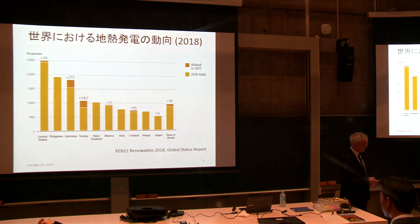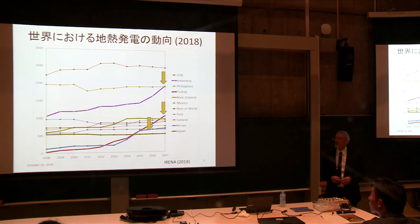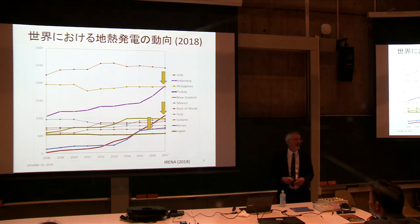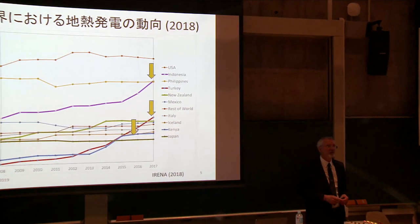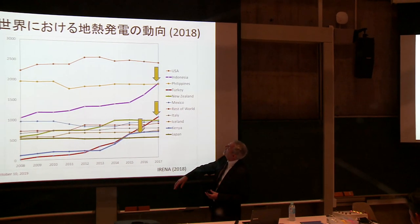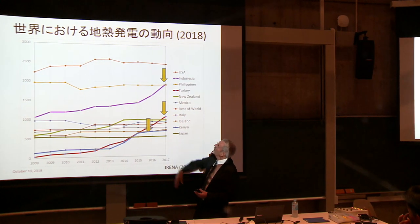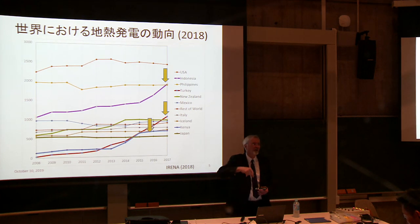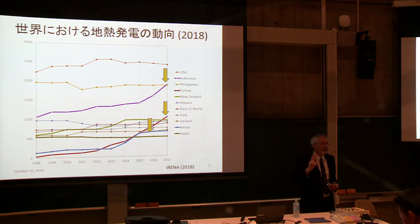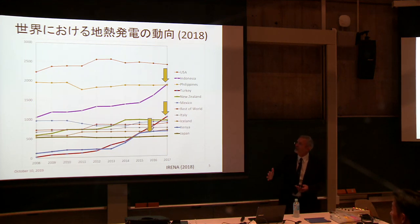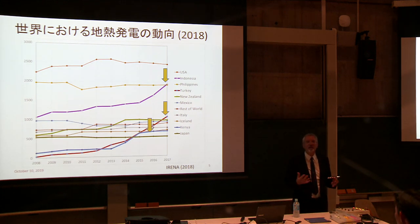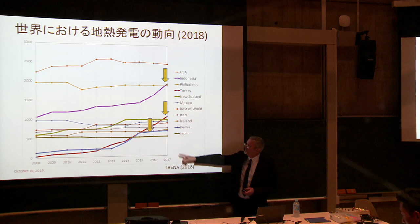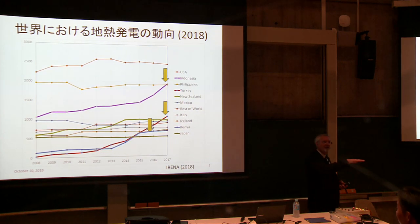Looking at the same graph separated country by country, you can see those countries rapidly expanding over time. Turkey had almost nothing and then ramped up to almost exceed all competing countries — it's now number four. Indonesia, just about three months ago, exceeded Philippines to become number two. Philippines was number two for a long time, but Indonesia has more geological advantage and has been able to move ahead.